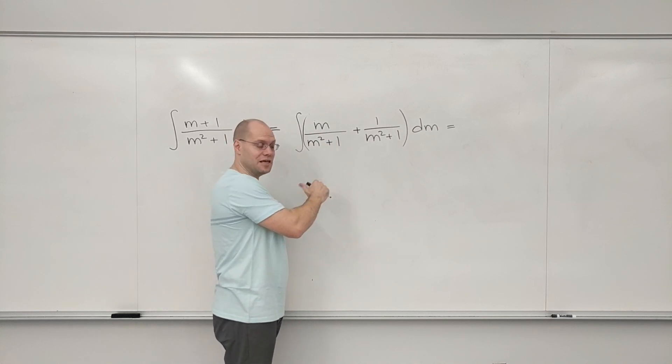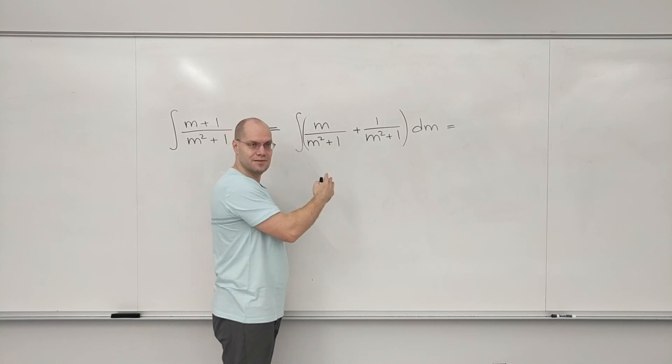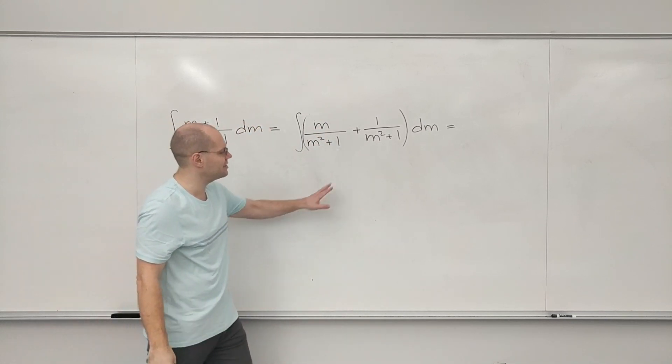Right. Even though it's not exactly the derivative, because the derivative of the something in the denominator is 2m, and we only have m, so half of what we need. But we can always fix that.